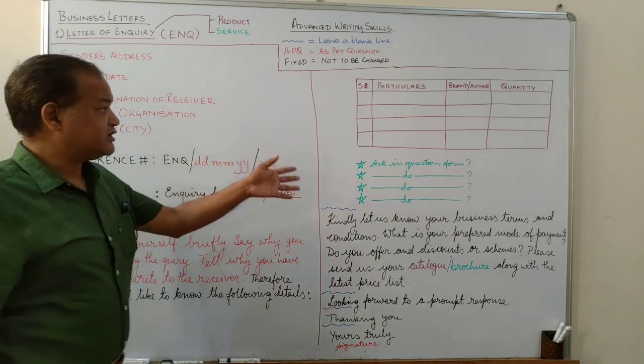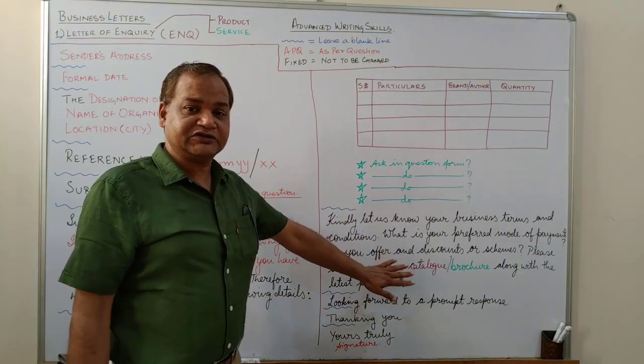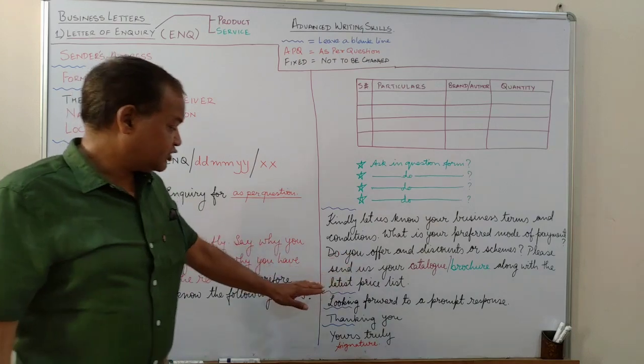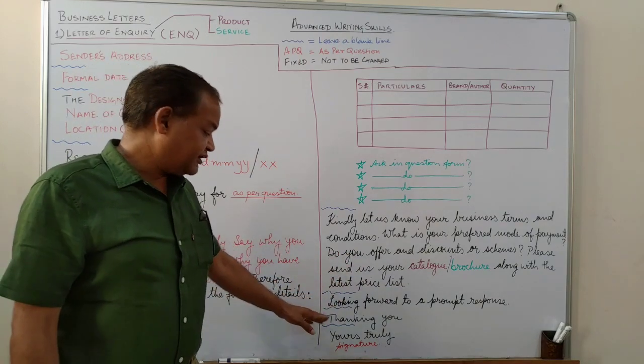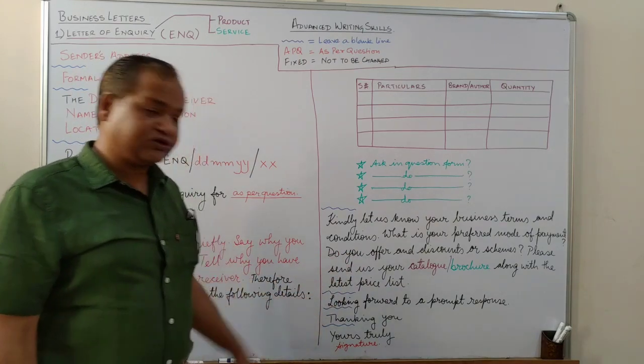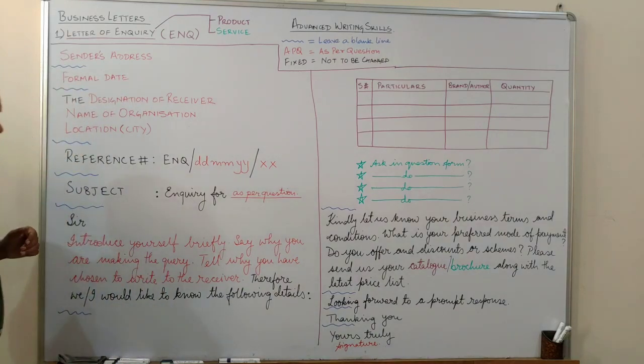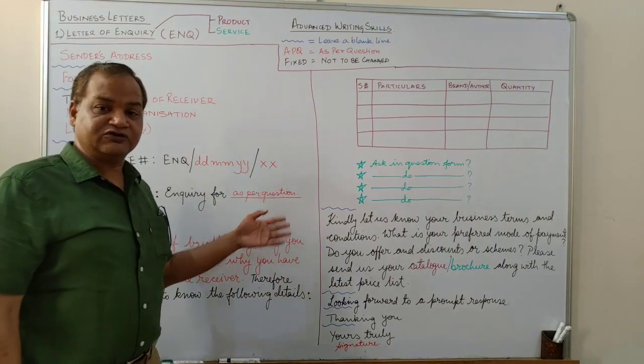So in this business letter of inquiry the third paragraph which is the final paragraph is fixed. Complementary closure fixed. Thanking you is fixed. Subscription is fixed. Salutation is fixed. Even the part of the subject line are fixed for you. Enquiry for and then whatever follows.